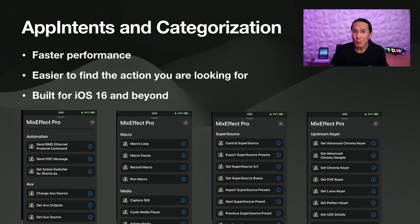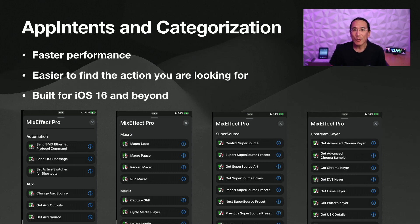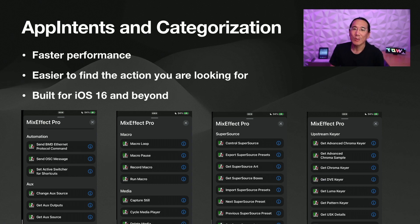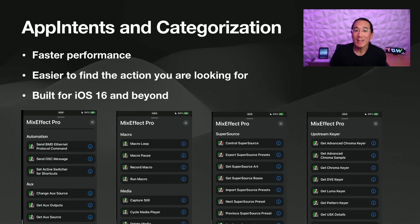Those predicate filtering actions will remain at the top, but everything else — from automation, the upstream keyer, the switcher, transitions, to the downstream keyer — are all nicely organized. So it's going to be a lot easier for you to find the action that you want. And App Intents are built for iOS 16 and beyond.